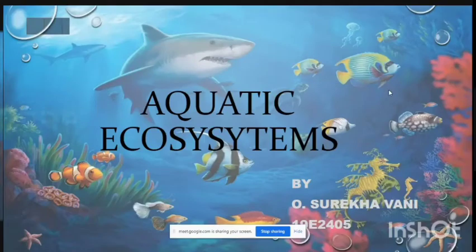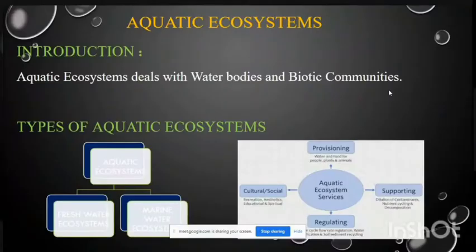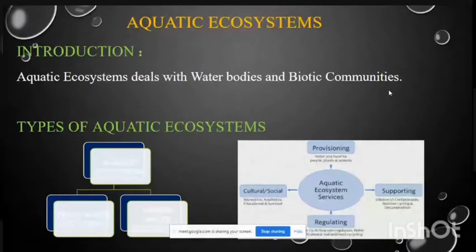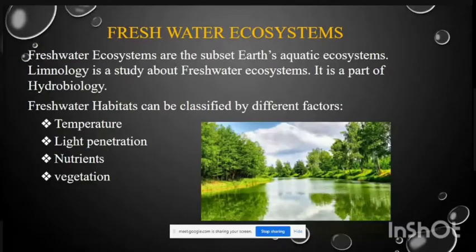Aquatic Ecosystems. This ecosystem deals with water bodies and its biotic communities. There are two types of ecosystems: Freshwater Ecosystems and Seawater Ecosystems.